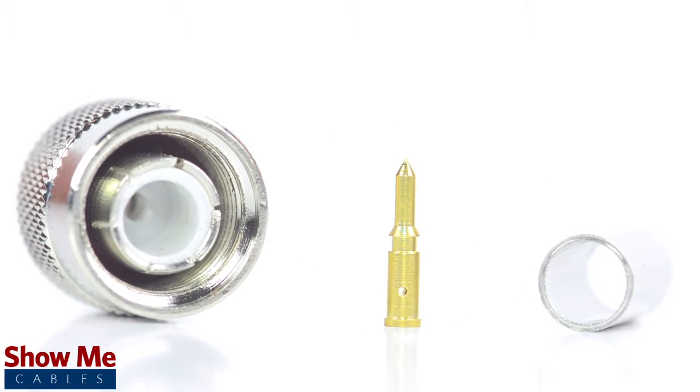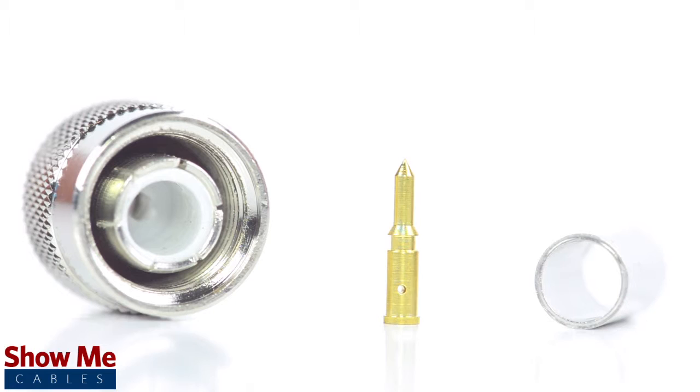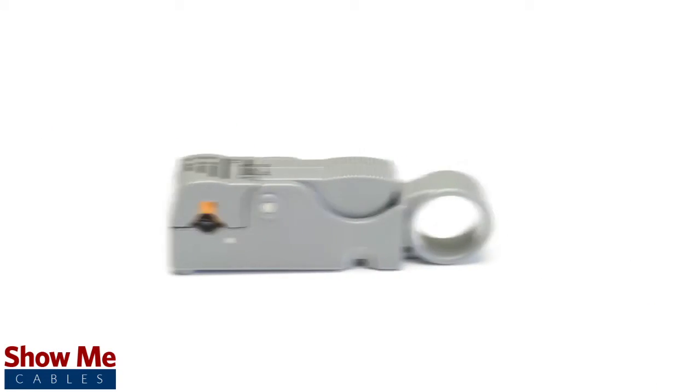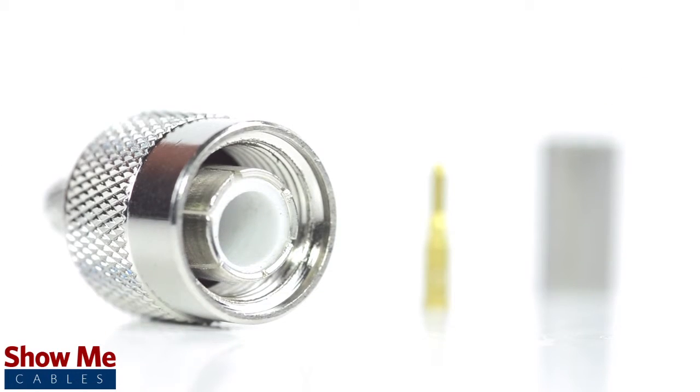The three-piece connector consists of the connector housing, the pin, and the ferrule. For this installation you will need a coax stripper, coax cable, a soldering iron, a crimp tool, and the TNC connector.